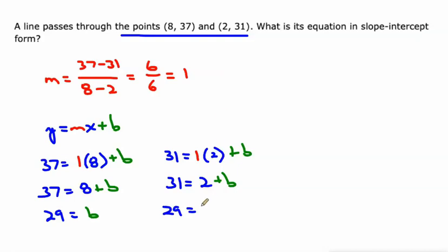So our y-intercept is 29, no matter which of the two points we use in the equation, as long as we calculate the slope correctly, that is. So our equation then is going to be y equals 1 times x